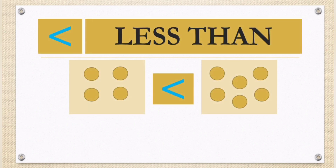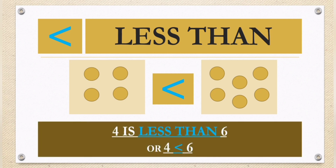Less than. Let's count how many circles are inside the box. One, two, three, four. In the second box: one, two, three, four, five, six. So if we are going to read it: four is less than six. Or it can be written like this — four is less than six. Why? Because four is a smaller number compared to six.